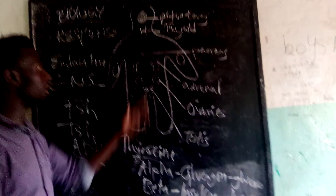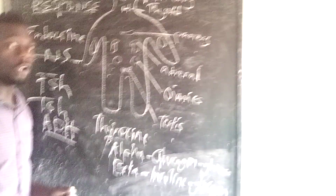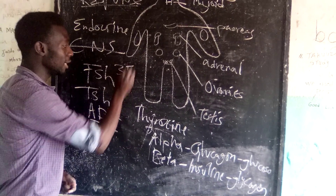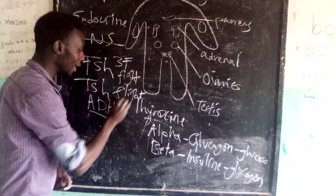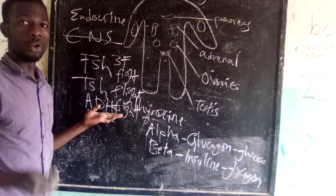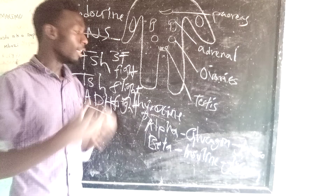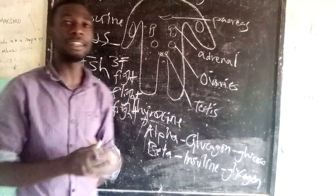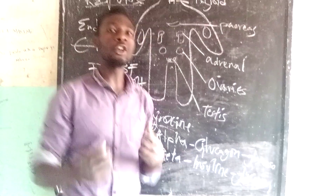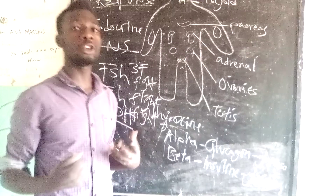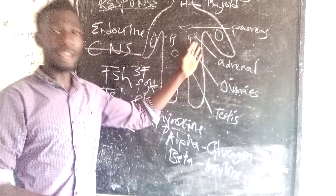We also have another hormone which comes from the adrenal gland — this hormone is known as adrenaline. Adrenaline is sometimes referred to as the 3F hormone, meaning fight, flight, and fright. The adrenal gland is also referred to as the emotional hormone — for you to laugh, to get angry, to run, to fight back if you are being attacked, or to respond to danger, it is all controlled by the adrenal gland.